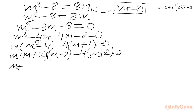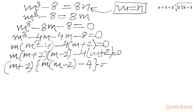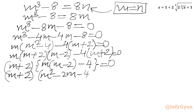Now m plus 2 is common. We take m plus 2 common out. In the bracket we will get m times m minus 2 minus 4 equal to zero, giving m plus 2 times m squared minus 2m minus 4 equal to zero.